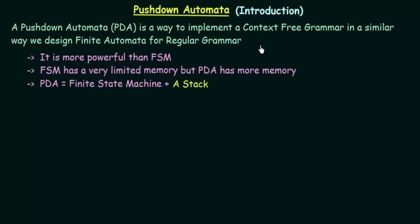The main points to remember about Pushdown Automata: first, it is more powerful than Finite State Machines. Finite State Machines have a very limited amount of memory, and we saw the limitations we faced while designing them. There were certain languages that could not be designed using Finite State Machines due to their limited memory. Those languages can be designed using the Pushdown Automata.